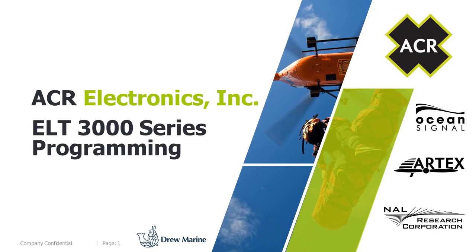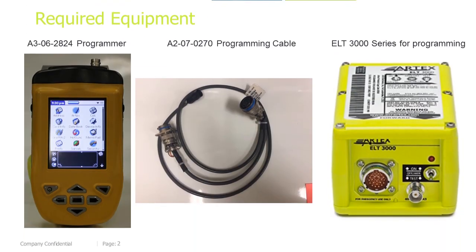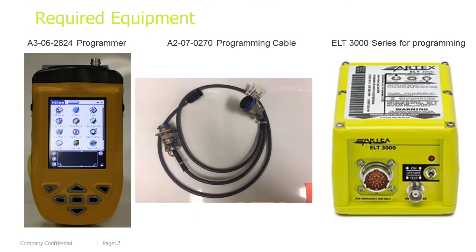Welcome to the ELT3000 series programming module. Required equipment: you will need a programmer, part number A3-06-2824, a programming cable, part number A2-07-0270, and an ELT3000 or 3000PA for programming.